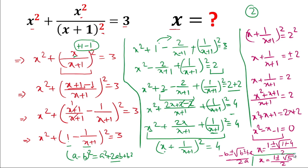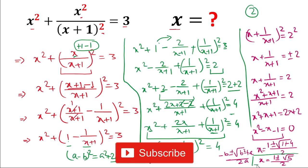So the value of x is (1 ± √5)/2, calculated when we took the expression equal to +2. Now, what will be the answer when the expression value is −2? Give your answer in the comment box. Don't forget to subscribe to the channel. Thank you for watching!